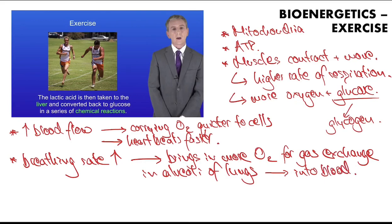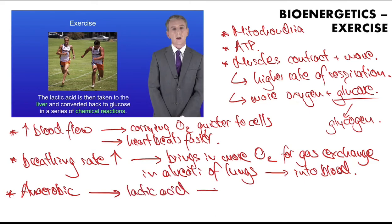Oxygen can then move into the blood and be taken to where it needs to be for more respiration to occur. When you don't have enough oxygen, you carry out anaerobic respiration, which means you break glucose down into lactic acid. Lactic acid forms in your muscles but is toxic and can cause muscle cramps.